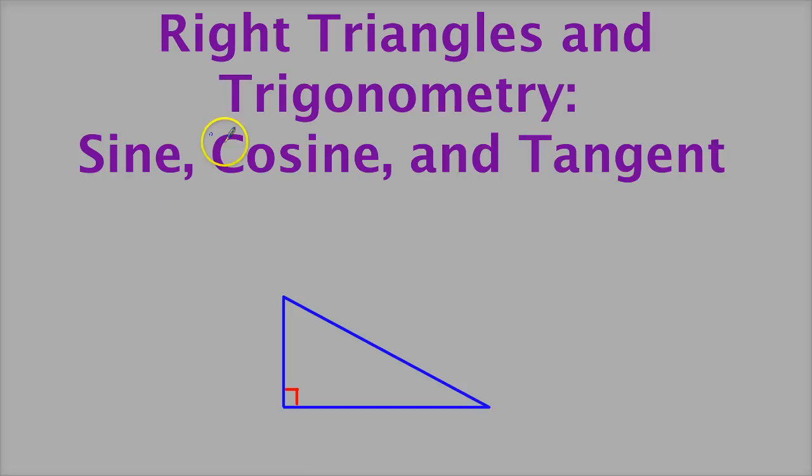Sine of X, and X is relative, is the opposite side over the hypotenuse. Cosine is the adjacent side versus the hypotenuse. And tangent of X is equal to the opposite side over the adjacent side.